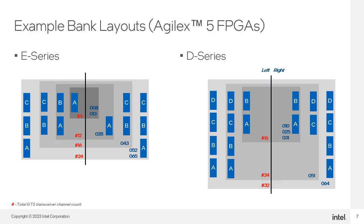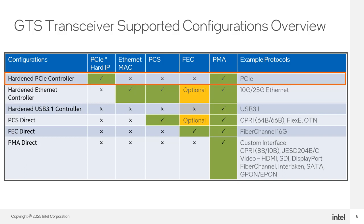The number of GTS transceiver banks varies depending on the density of the FPGA and its package variants. As an example, this slide shows the GTS transceiver banks found in Agilex X5 E-series and D-series devices, particularly in the B32A package. The dark gray square in the center of each diagram represents the smallest package; as you move out, the larger and lighter squares represent increasingly larger packages. The size of the FPGA members in that package is indicated by the number in blue, and the number of transceivers available is shown in red. This table shows the various configurations supported by the GTS transceiver bank, along with the GTS resources used and example protocols.